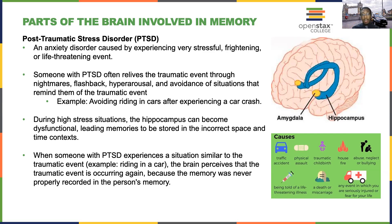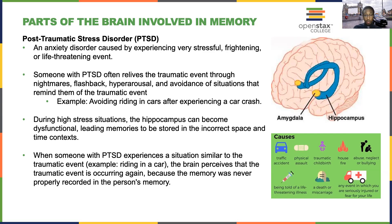What that means is that whereas episodic memories are typically stored with regard to time and space, they become incorrectly stored when the hippocampus is under stress or when a person is experiencing a traumatic event. So when someone with PTSD encounters a situation similar to the traumatic event, the brain misperceives it as actually occurring again, because the memories were not properly stored — they were jumbled when first encoded and consolidated. These memories then surface in inappropriate situations, such as during nightmares or flashbacks.